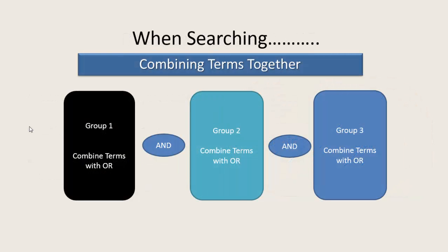When it comes to doing your search, this is how you would use AND and OR approaching a database search. The first thing you would do is break your search up into groups or concepts — group 1, group 2, and group 3. Group 1 might be hand washing, where you have hand washing OR hand hygiene — different ways of describing the same thing. In group 2, you may have hospital-acquired infections OR nosocomial infections — two different ways of describing the same topic.